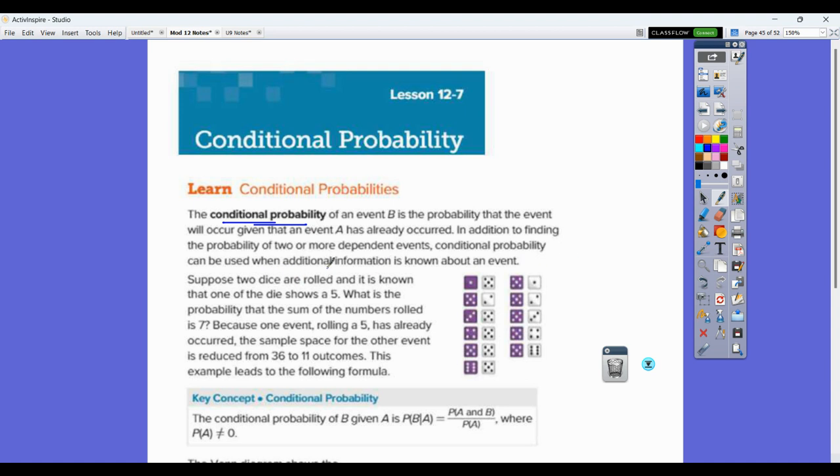So suppose two dice are rolled and it is known that one of the dice shows a 5. What is the probability that the sum of the numbers rolled is 7? Because one event rolling a 5 has already occurred, the sample space for the other event is reduced from 36 to 11 outcomes. So there are 36 possible ways to roll two dice. We're down to only these 11 outcomes because we already know that one of the dice shows a 5.